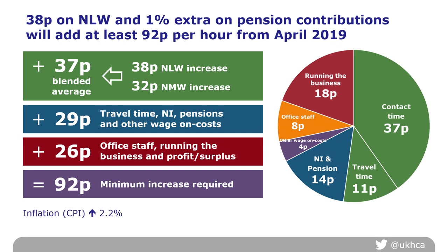Some councils will argue that inflation is running at about 2.2%, which is the most recent consumer price index, while UKHCA's minimum price has gone up by 5.11%. That's absolutely true, but it illustrates how inflationary costs in the home care sector are largely driven by increases in the statutory minimum wage, which are going up much higher than the consumer price index.